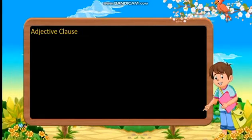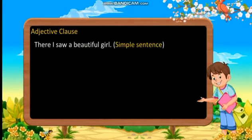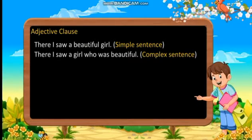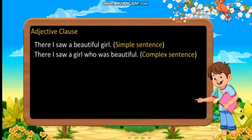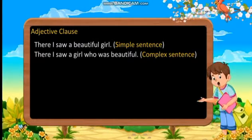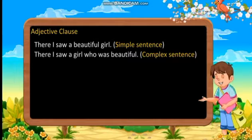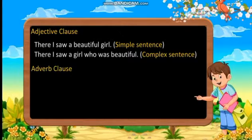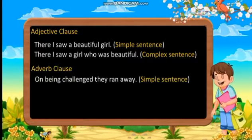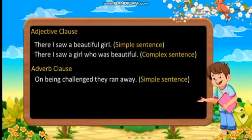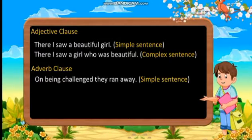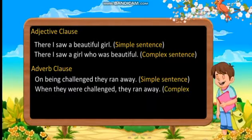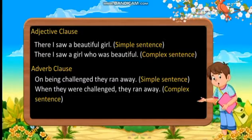Adjective clause example: 'There I saw a beautiful girl.' — Simple sentence. 'Where I saw a girl who was beautiful.' — Complex sentence. Adverb clause example: 'On being challenged, they ran away.' — Simple sentence. 'When they were challenged, they ran away.' — Complex sentence.